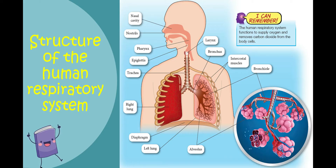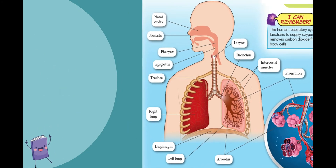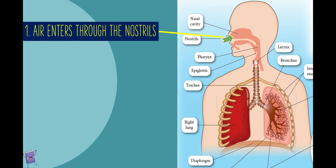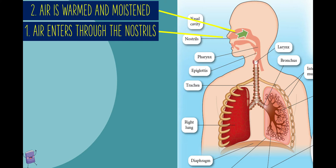Structure of the Human Respiratory System. Air enters the respiratory system through the nostrils. The air then passes into the nasal cavity, where it is warmed and moistened. Dust is trapped by the hairs.